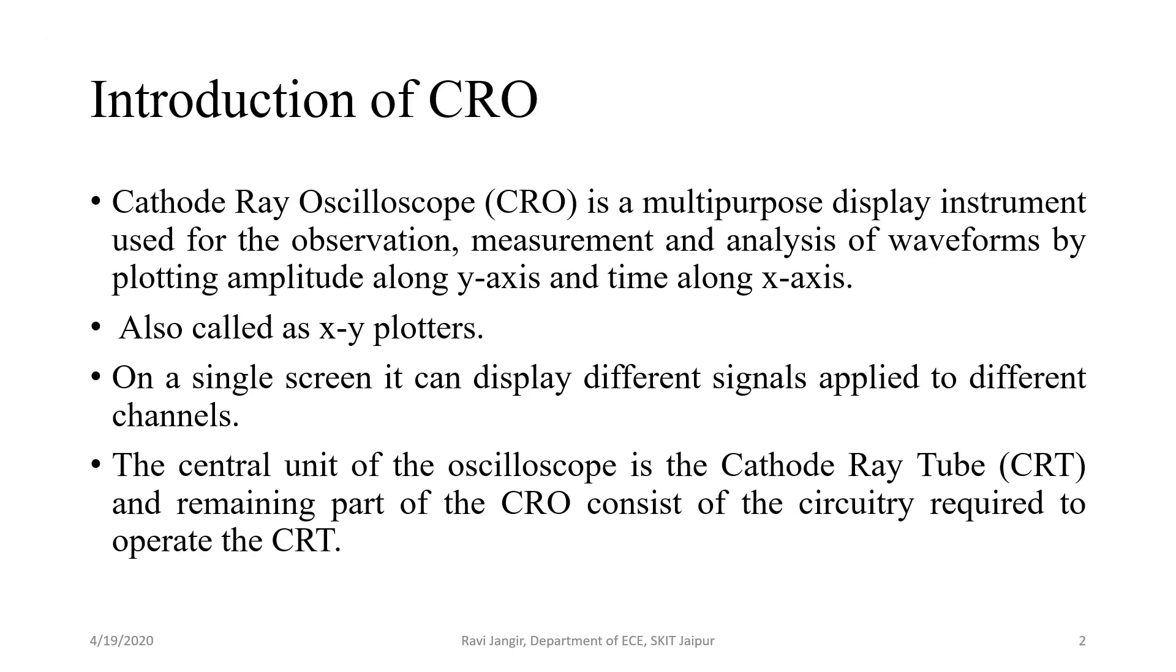Cathode ray oscilloscope is a multipurpose display instrument used for observation, measurement and analysis of waveforms by plotting amplitude along y-axis and time along x-axis. They are also called as XY plotters. It means that they create a 2D image on the screen.